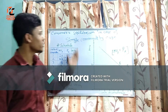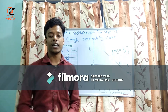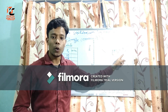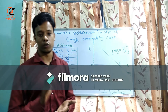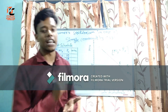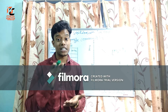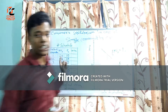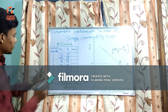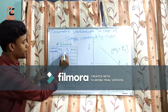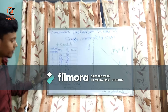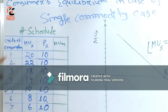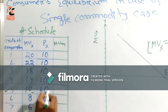Consumer's equilibrium in the case of a single commodity: the condition is MUX equals PX. It means the marginal utility of good X should become equal to the price of good X. The consumer will continue purchasing until his utility becomes equal to the price level. From the schedule, at the fifth unit of consumption we get MUX equals PX, that is 10.